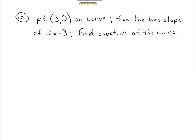All right, so we've got a point on the curve. We know the tangent line has a slope that's represented by the expression 2x minus 3. We've got to find the equation of the curve. Essentially the same kind of problem as number 9.